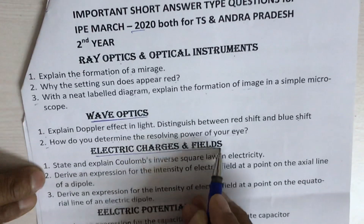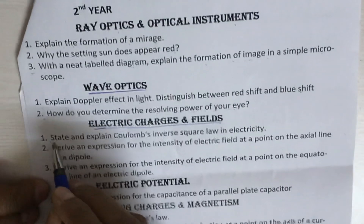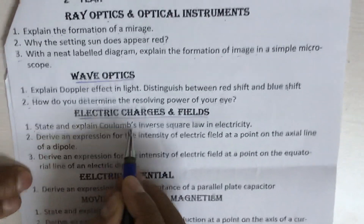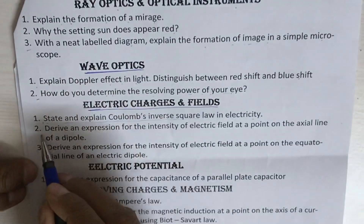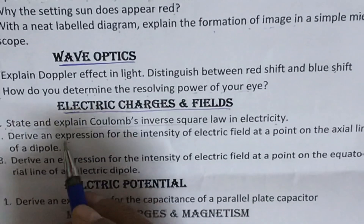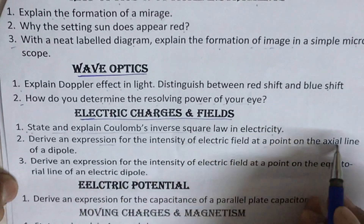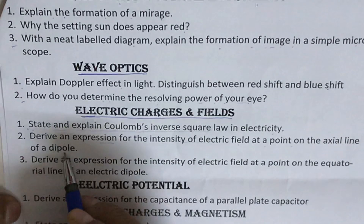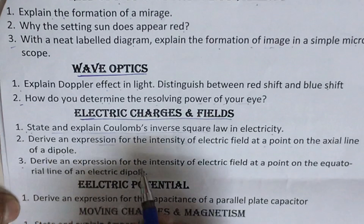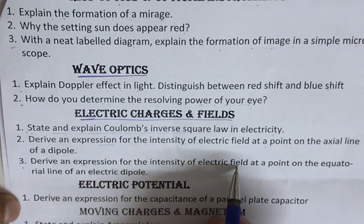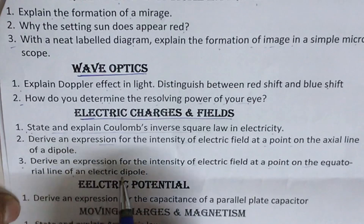The next topic is Electric Charges and Fields. Questions from this topic are: first question, state and explain Coulomb's inverse square law in electricity. Second question, derive an expression for the intensity of electric field at a point on the axial line of a dipole. Third question, derive an expression for the intensity of electric field at a point on the equatorial line of an electric dipole.